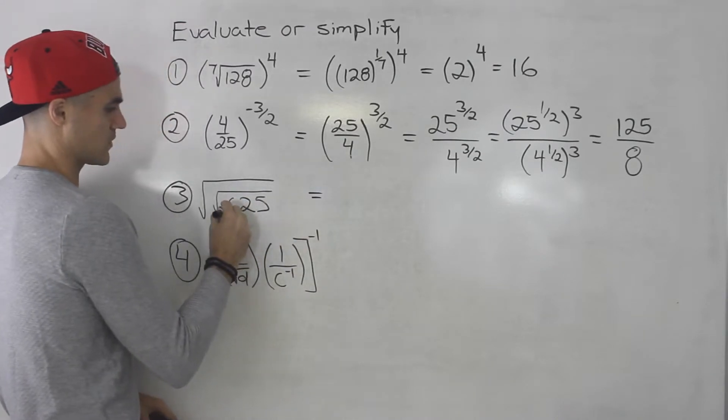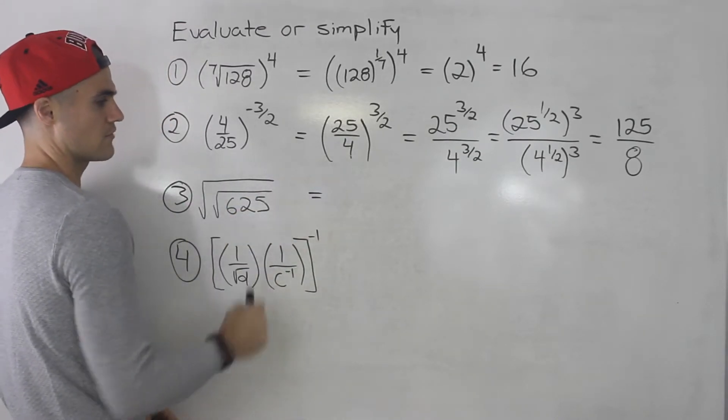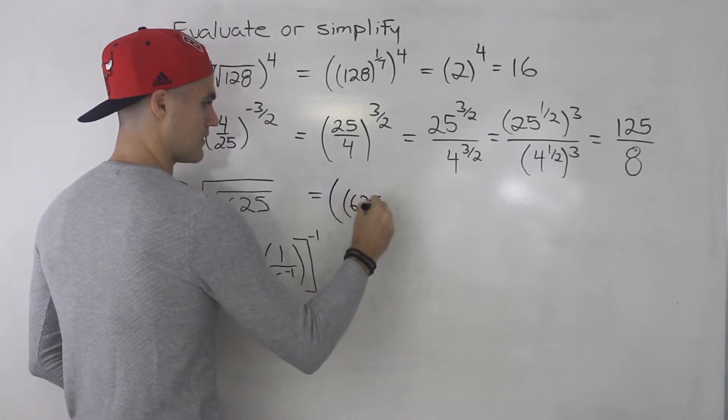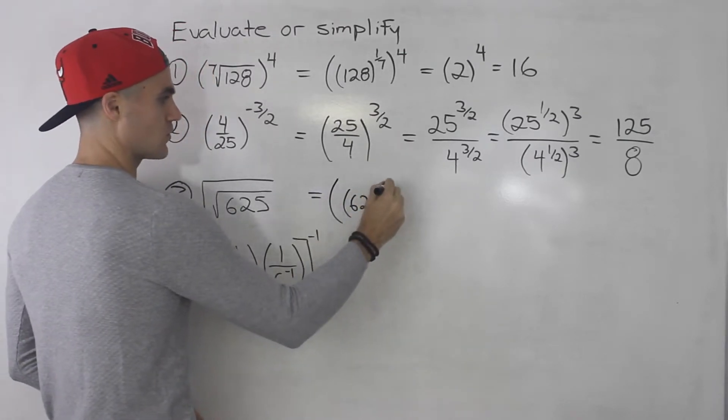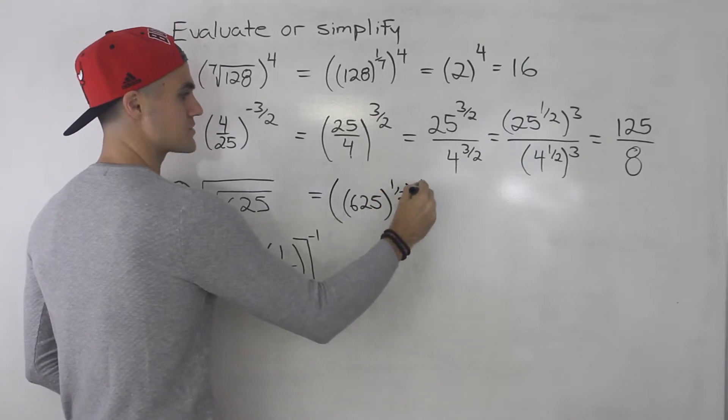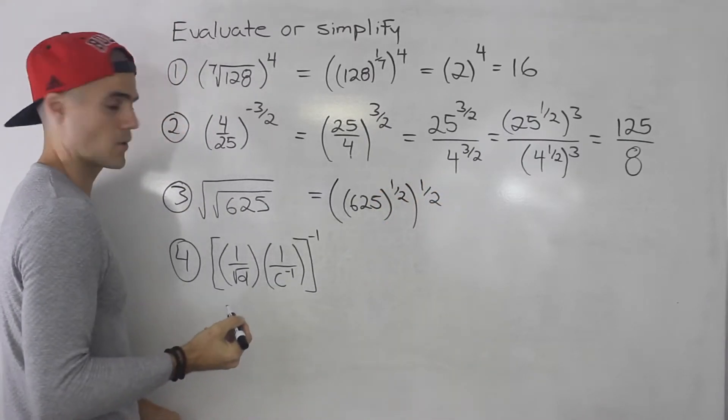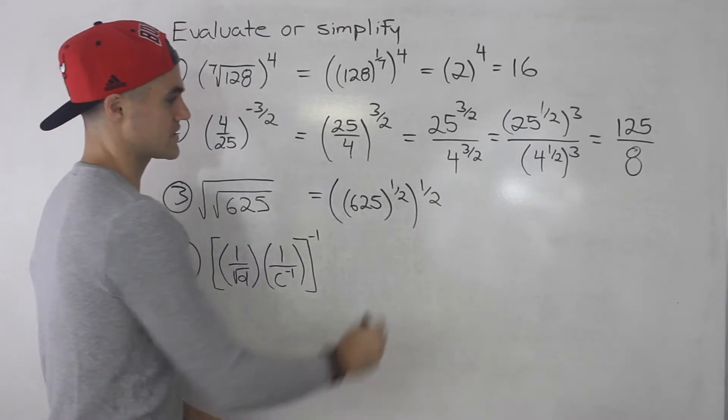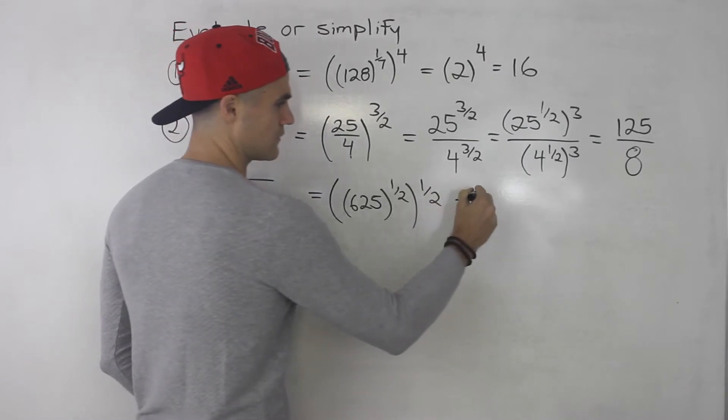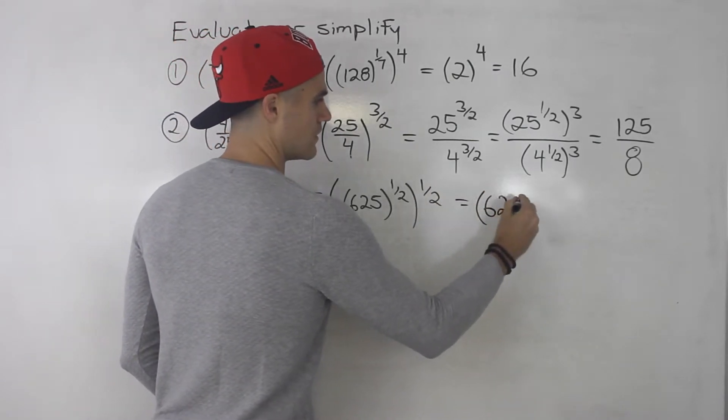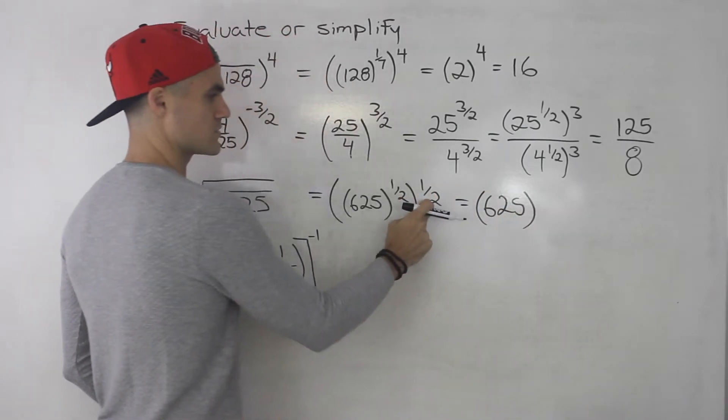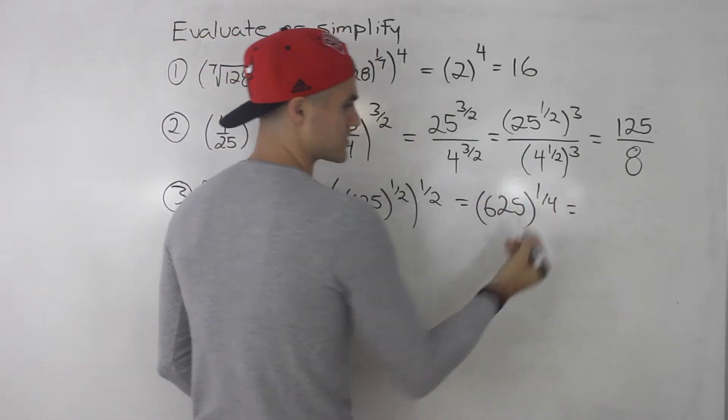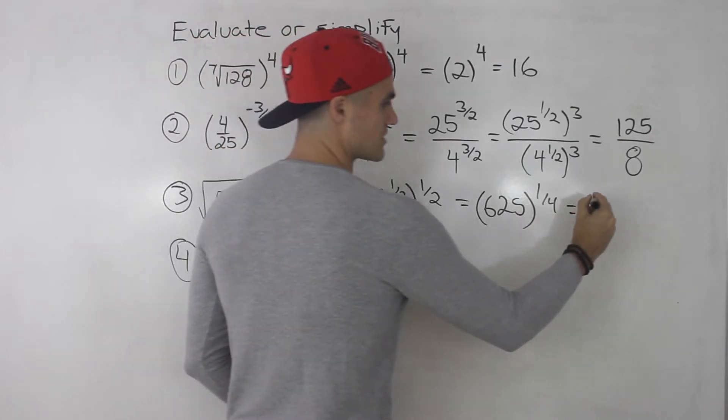We got the square root of 625 and then the square root of that. So what we can do, the inside square root we could change to 1 over 2. Then the outside square root we could change to 1 over 2 as well, right? Taking the square roots, changing them to rational exponents. Then here we can multiply these exponents. We'll have 625 to the power of 1 over 2 times 1 over 2. That is 1 over 4. Then what's the 4th root of 625? It's just equal to 5.